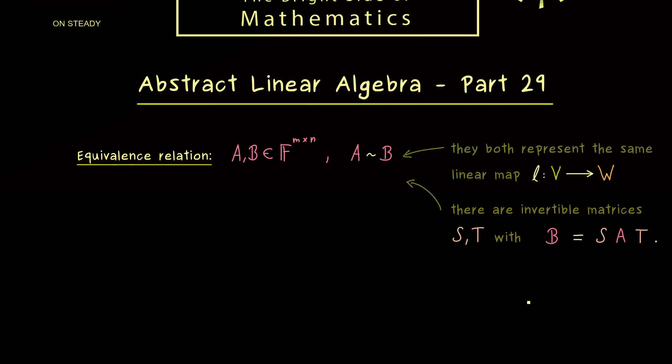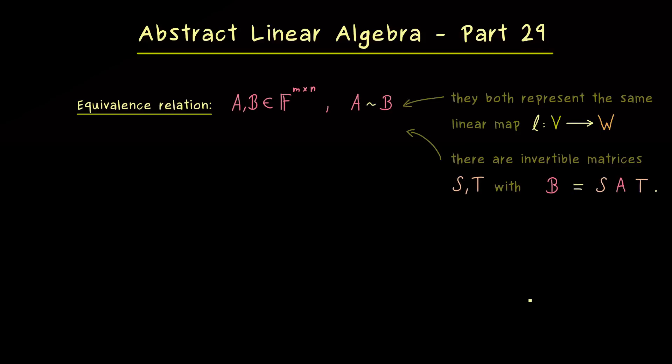And now we have a natural question, namely, do we have an invariant under such an equivalence operation? So we could ask, is there something in the matrix which does not change while doing these matrix multiplications? For example, it could happen that the kernel or the range of the matrix does not change when we form this matrix product.